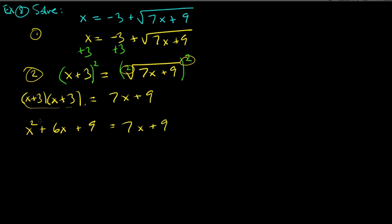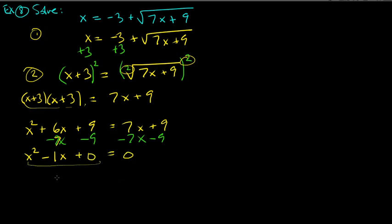We have a quadratic equation. Subtract 7x and subtract 9 from both sides: x squared plus 6x minus 7x plus 9 minus 9 equals zero, simplifying to x squared minus x equals zero.